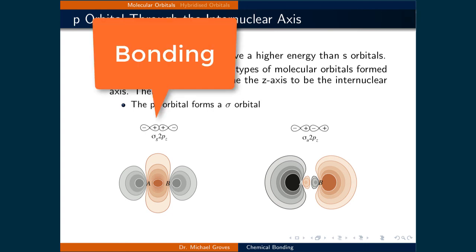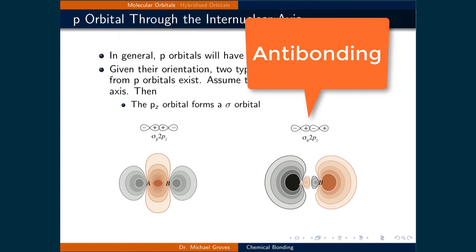If the up part of both p orbitals overlap, they constructively interfere, and a bonding orbital results. If the up part overlaps with a down part, then the wave function destructively interferes, and an antibonding orbital occurs.